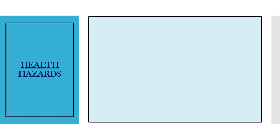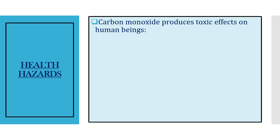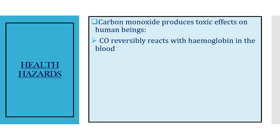Now, health hazards — what are the ill effects on our health due to carbon monoxide? The toxic effects on human beings: first, CO reversibly reacts with hemoglobin in the blood. Hemoglobin (HbO₂) has a tendency to bind to oxygen, but when it comes in contact with carbon monoxide, CO replaces or displaces the oxygen, resulting in the formation of carboxyhemoglobin.